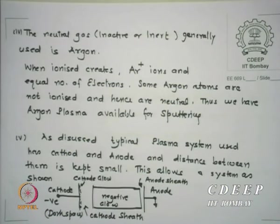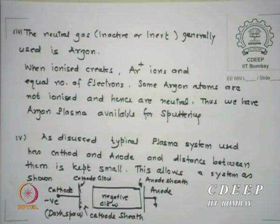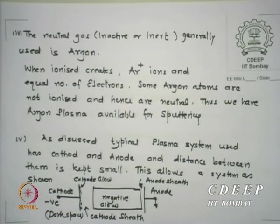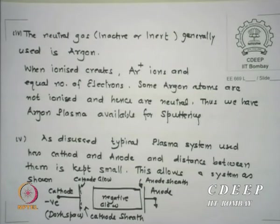In general, in a sputtering system there is a small sheath at the cathode, a larger sheath at the cathode, and a smaller sheath at the anode. You can derive this from the IV characteristics of a plasma system. Since the anode is grounded, the potential at the anode end should be 0, and since the cathode is negative, the potential at that end should be a negative value. I am creating a plasma by discharging through a potential of minus Vc to ground, and I expect some cathode drop — the sheath potential in the dark space. Then there is a glow and a small anode sheath at the anode side.